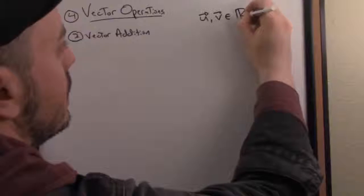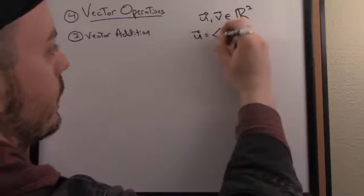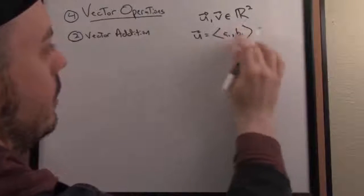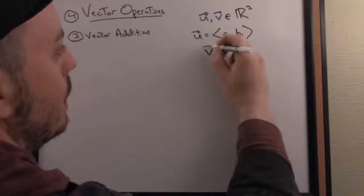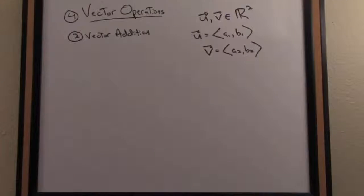So let's label everything here. Let's say we have two vectors u and v. To make things nice and efficient, we'll say they're both two-dimensional vectors and we'll label their components. So vector u is a1, b1 and vector v is a2, b2.